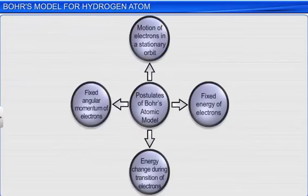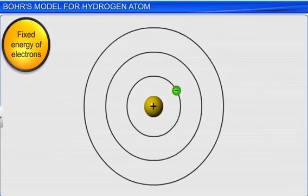According to the second postulate, the energy of an electron in the orbit remains constant until the electron absorbs energy to jump to a higher orbit.